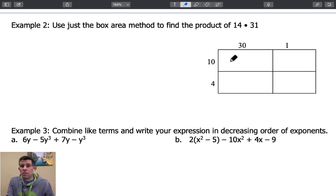For example, let's multiply the product, or let's find the product of 14 times 31. To do so, we're going to take 14 and divide it up into two parts, 10 plus 4.